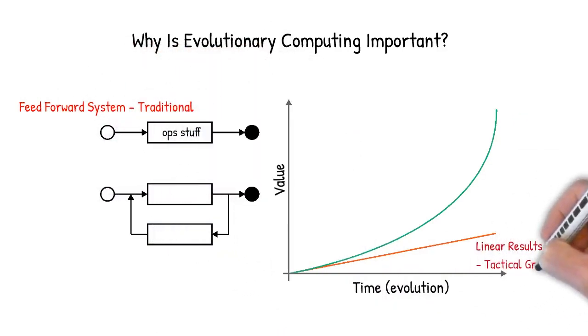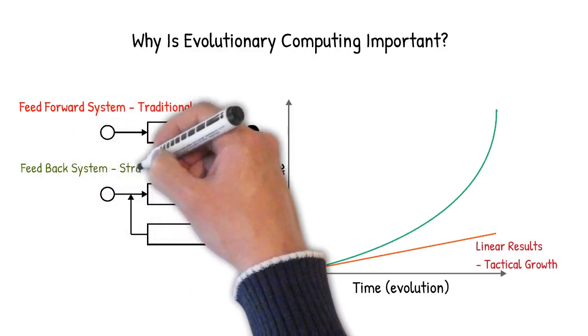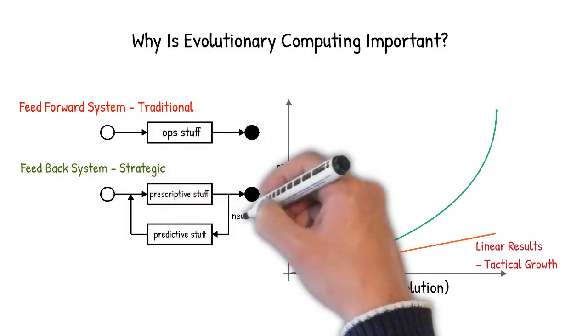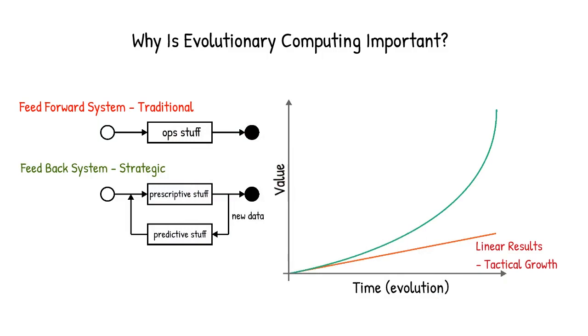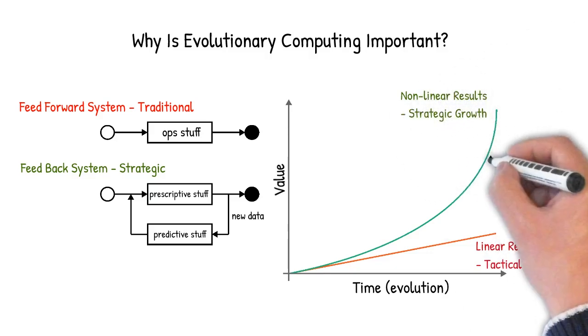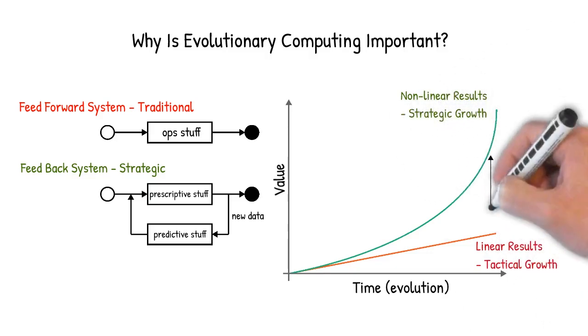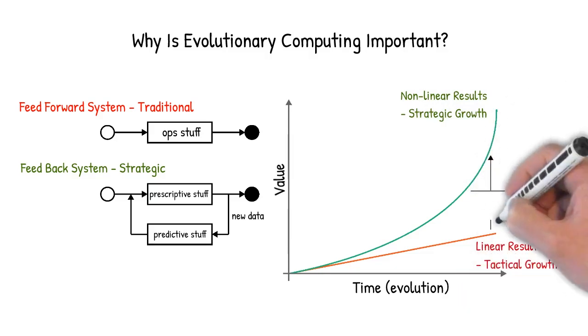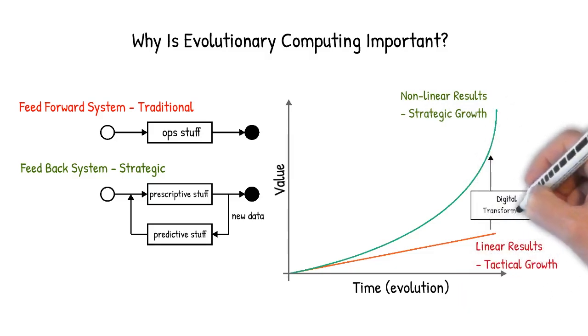Evolutionary systems are based on feedback systems, which prescribe and implement changes in the real world. Once completed, new real world data is recollected to build a next generation digital twin. This produces non-linear results or exponential value. This amazing difference between the new non-linear and old linear responses come from true digital transformation.